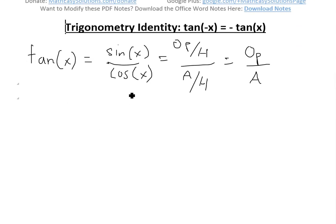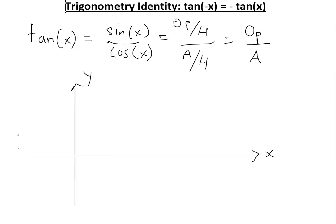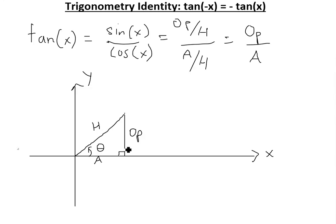Now let's look at a graph. We'll change the variable to theta. If we draw a right triangle with angle theta, we have the opposite side, the hypotenuse, and the adjacent side. So tan of theta equals opposite over adjacent.